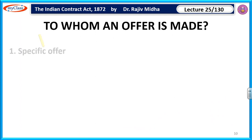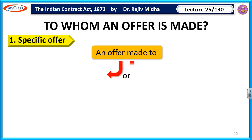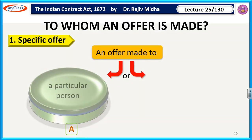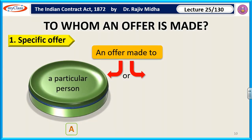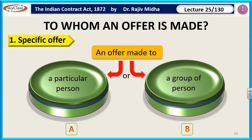To whom an offer is made? In this we will take up two points. The first is specific offer — an offer made to a particular person. When any offer is given to a particular individual, then this is the specific offer. Or an offer made to a group of persons. If an offer is given to a particular group of persons, then this is also the specific offer. So specific offer means an offer which is given to a particular person or a particular group of persons.